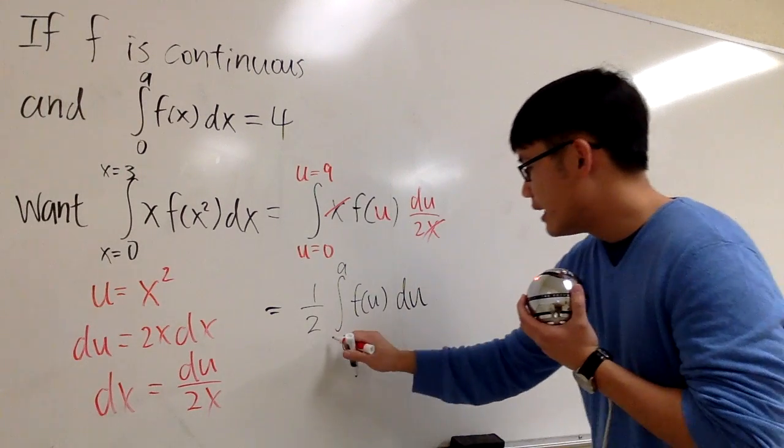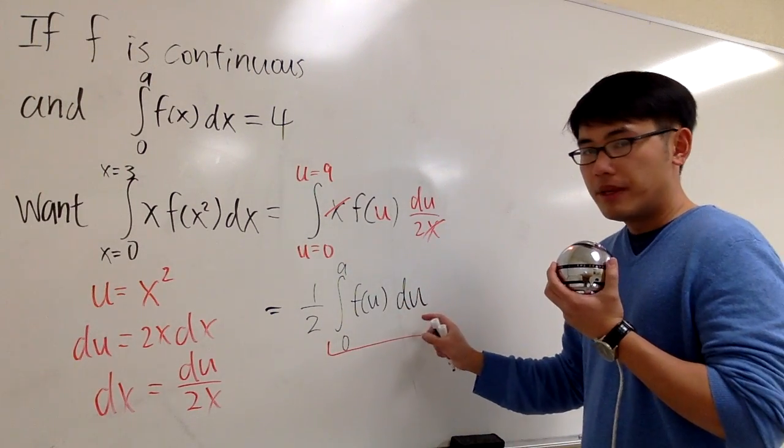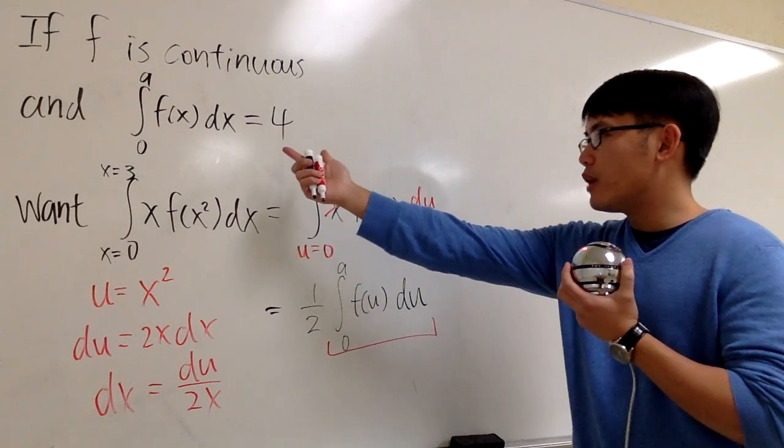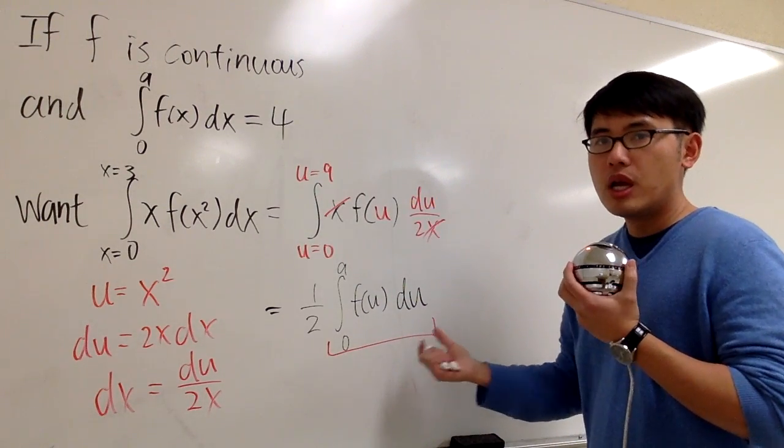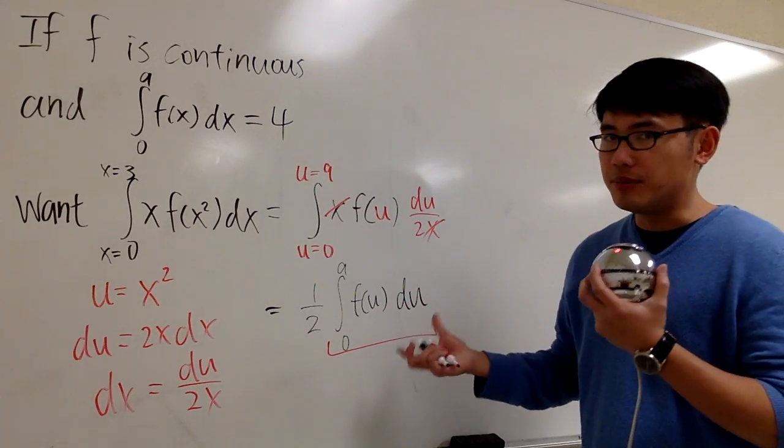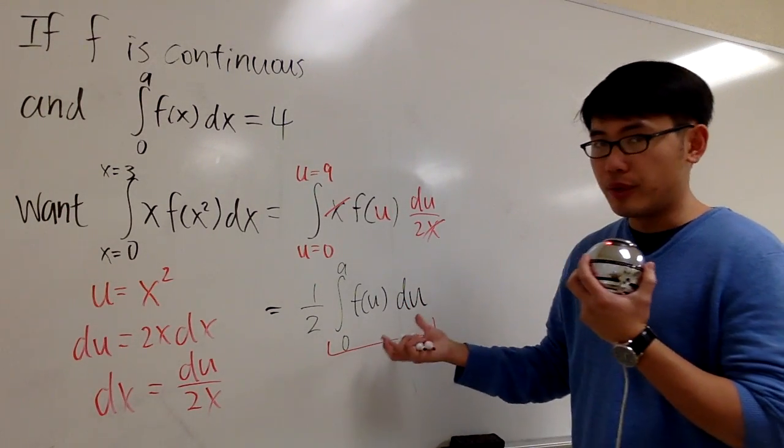But notice that this part, this integral, it's the same as that one. Over there we have x, but here we have u. But the value of this integral will be the same because it represents the same area, same region.